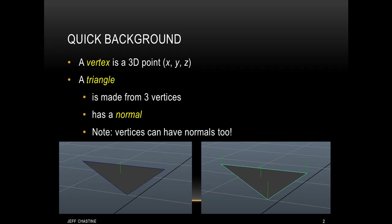First of all, we have the concept of a vertex, which is a point in 3D space, and therefore it's going to have three components: X, Y, and Z. At a slightly higher level, we have the concept of a triangle. A triangle is made of three vertices, or three points, and it also has a normal. Down here in the lower left image, you can actually see the normal — it's the line that's perpendicular to all three of these edges. It's also important to note that each vertex can have a normal, and that's actually what OpenGL is going to be using.